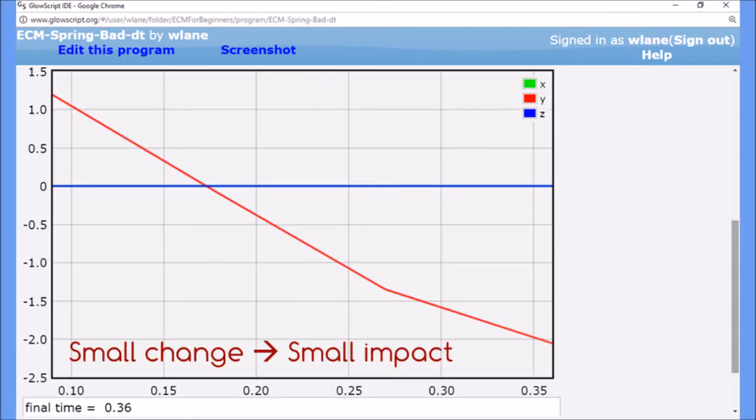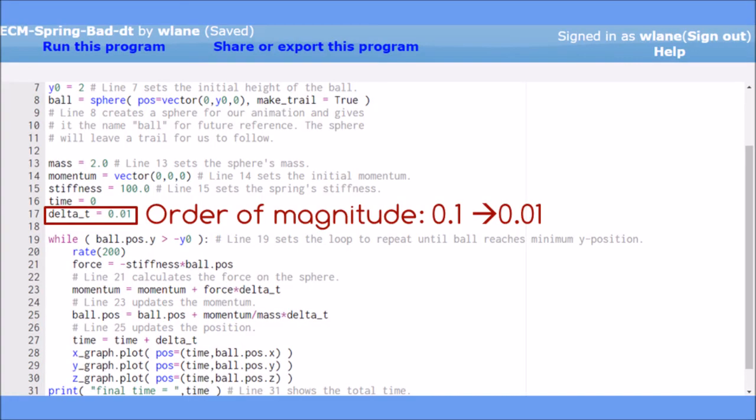We still get the jagged graph and only a handful of data points. Instead of making small changes to the step size, we should change its order of magnitude, meaning change from 0.1 to 0.01. Changing a number's order of magnitude usually means multiplying or dividing by 10.